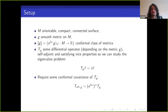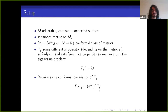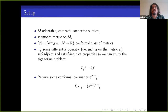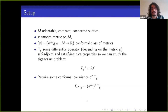I'll ask that T(g) is self-adjoint, which makes the eigenvalues real and makes calculations easier, and that it satisfies nice enough properties so you can actually study the eigenvalue problem on your surface. I require a condition of conformal covariance: if you multiply the metric by some conformal factor e^{2ω}, then that factor can pop out of the operator to some power α, recovering the original operator. This is not essential but makes calculations much easier, and both the Laplacian and the Dirac operator on surfaces satisfy this conformal relationship.